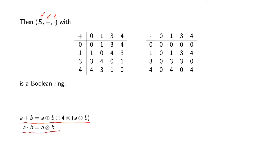Looking at the multiplication operation, we see that 0 is idempotent, 1 is idempotent, 3 is idempotent, and 4 is idempotent. For our redefined addition operation we get the table shown here on the left-hand side. Let us take one example of how we can compute this table.